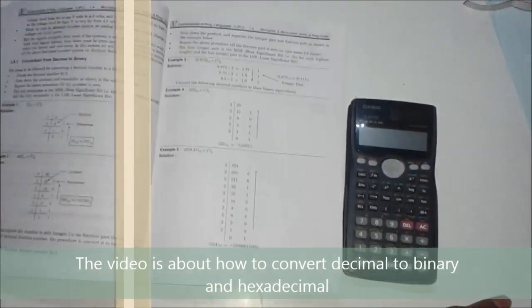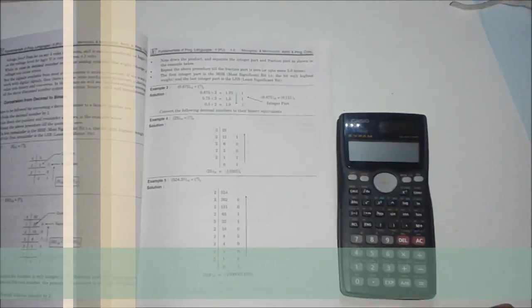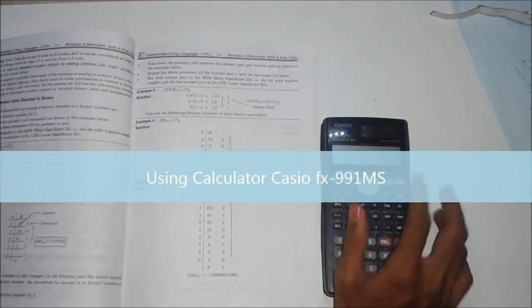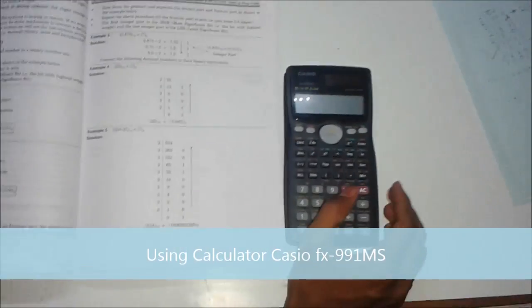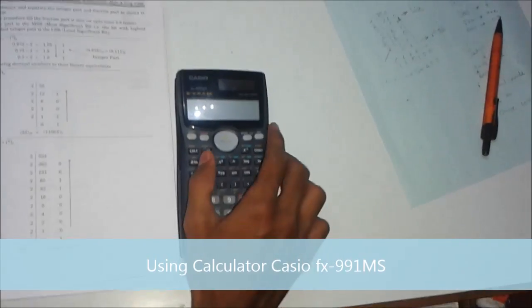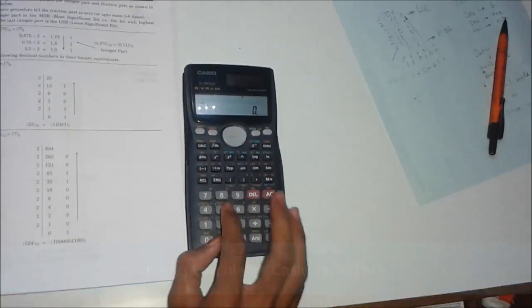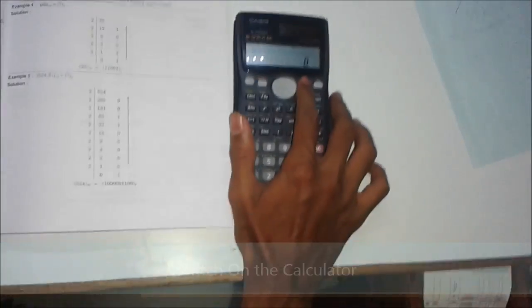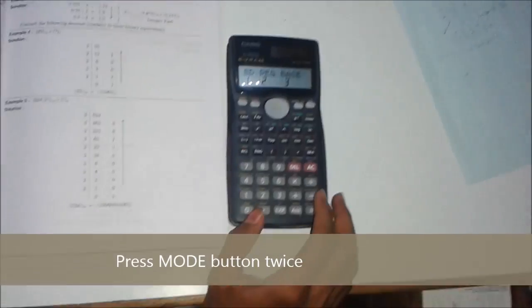Welcome to this video tutorial. Here I'll be explaining how to convert a decimal number into a binary number using the Casio FX-991MS calculator. Switch on the calculator, press the mode button two times, and select the base function by pressing 3.